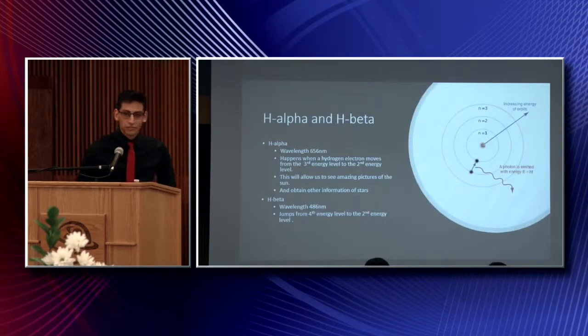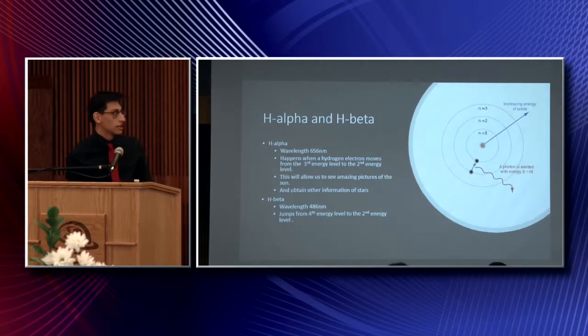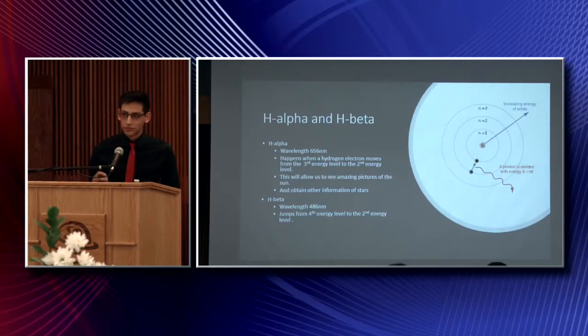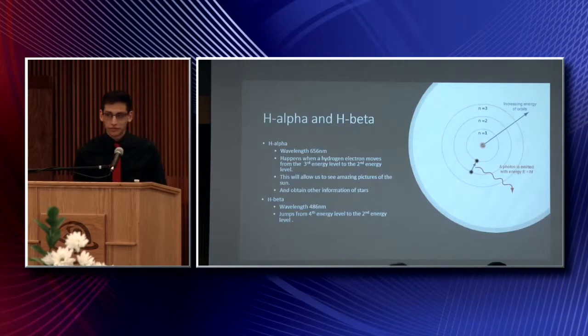So the H-alpha filter is a very popular filter among astronomers. It is used to take really cool pictures of stars, and you can tell a lot about it. But you can really see it when the electrons jump energy levels from 3 to 2, and it has a wavelength of 656 nanometers.